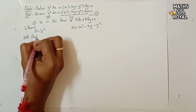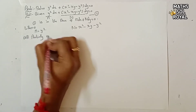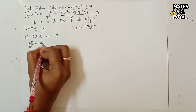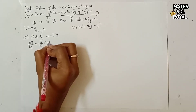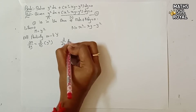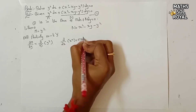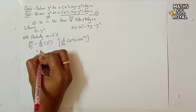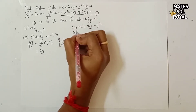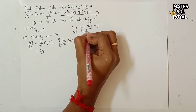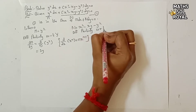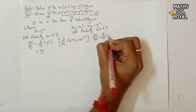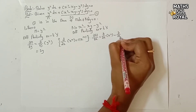Differentiate M partially with respect to y. Using the formula d/dx(xⁿ) = n·xⁿ⁻¹, we get ∂M/∂y = 2y. Now differentiate N partially with respect to x.